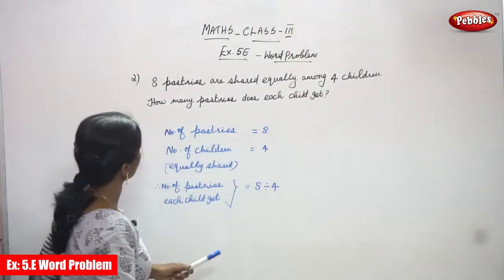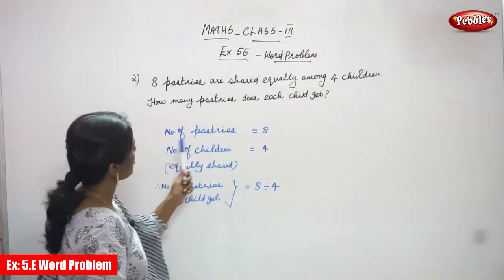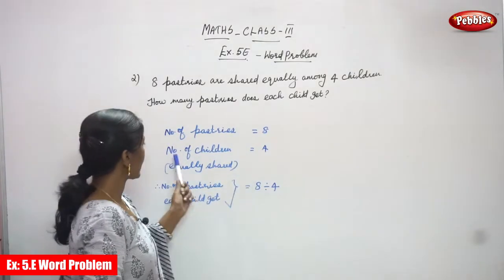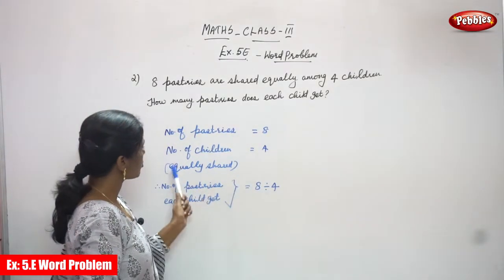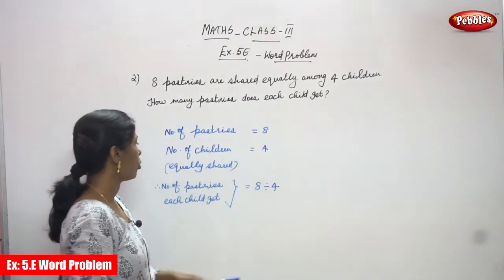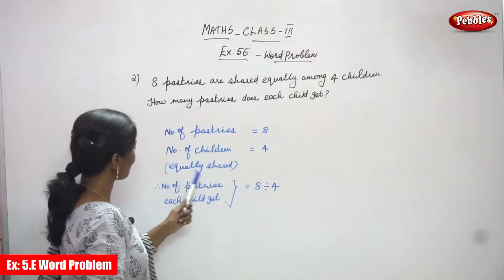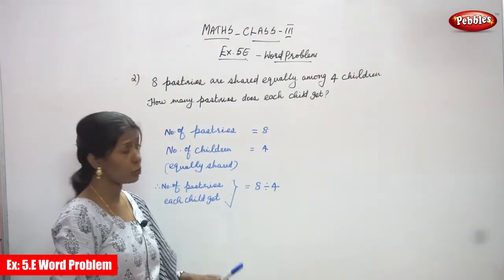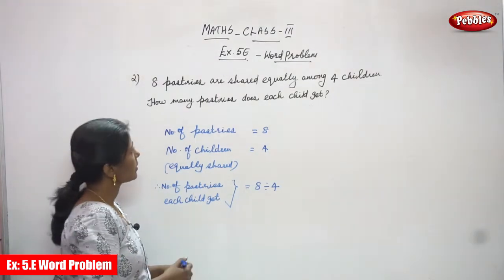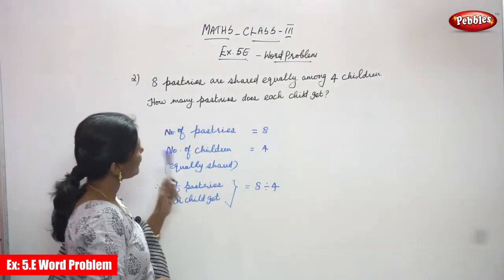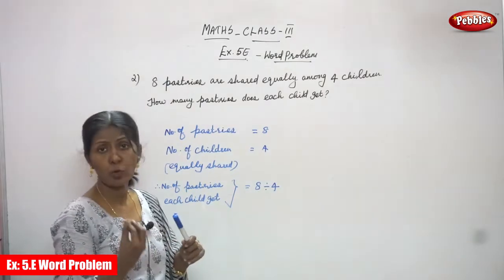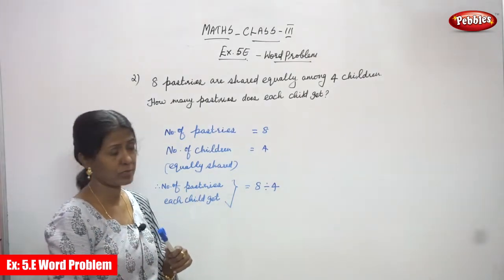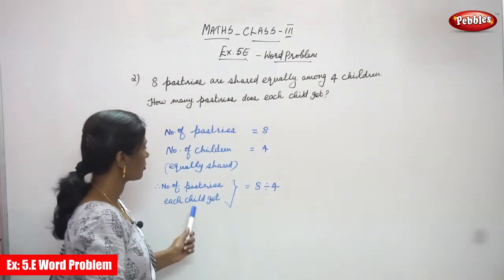The total number of pastries is 8, and the number of children equally shared is 4. The number of pastries each child gets — that is the division. For each child, how many pastries do you have to find out? Each child gets how many pastries? That is what we are going to find out.